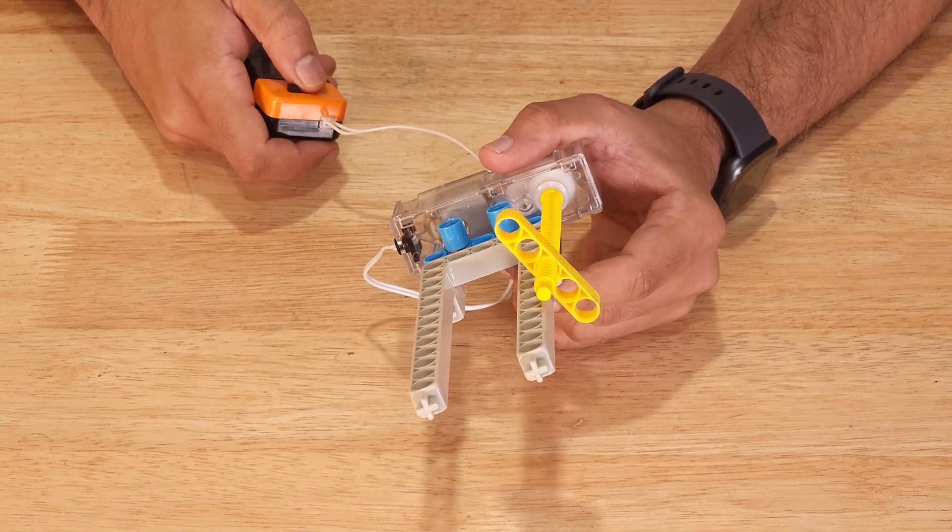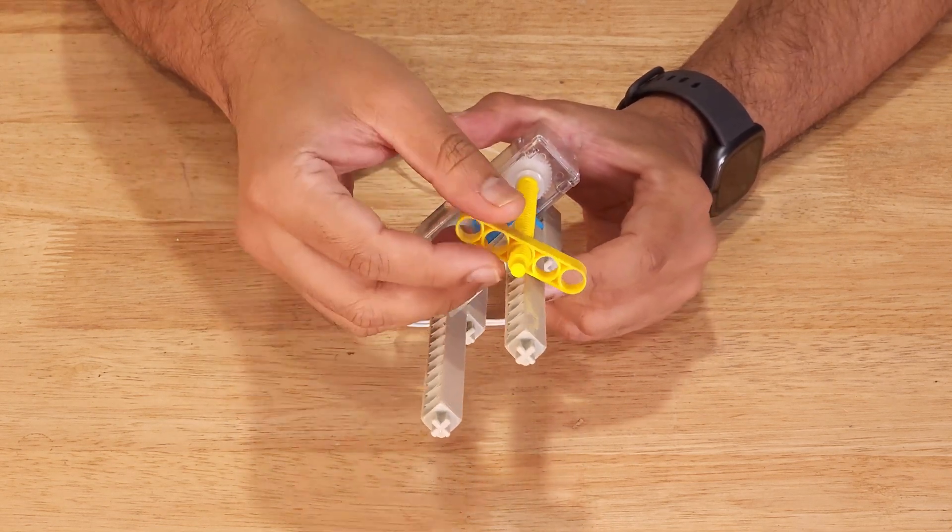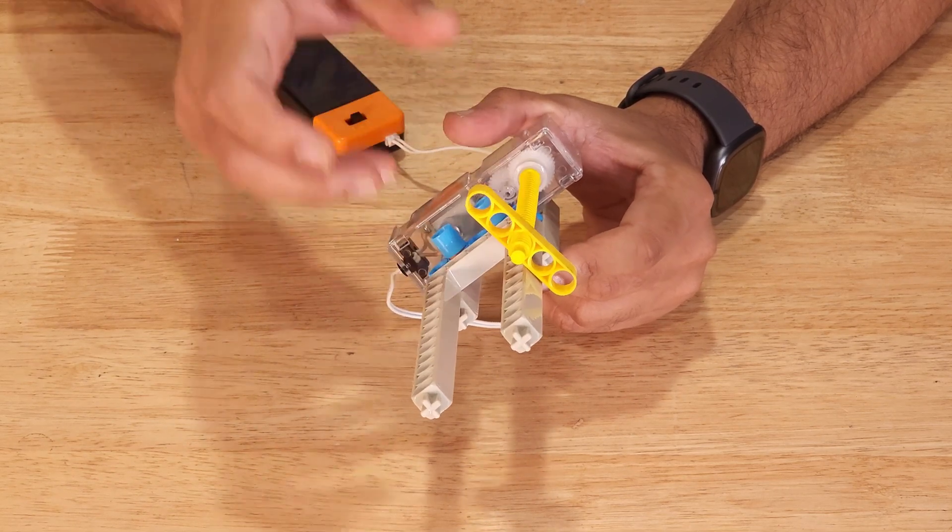So, as you can observe, the P5 nut is now travelling in a straight line. Of course, you can use multiple pieces to guide this P5 nut and convert rotational motion into linear motion.